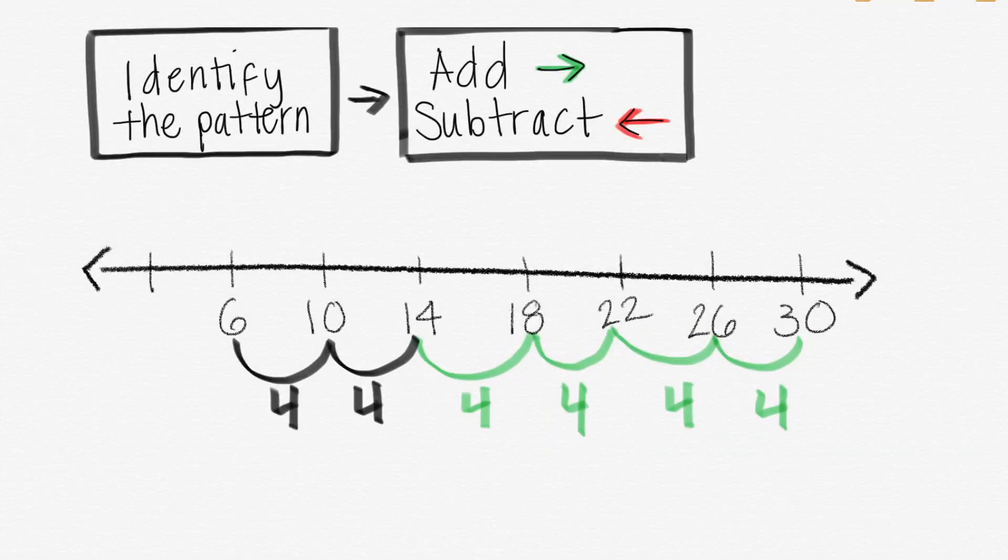Now that we've found all the numbers going forward, now we need to go backwards. So that means we're going to subtract 4. 6 take away 4 is 2. Now we know that the pattern was going by 4's.